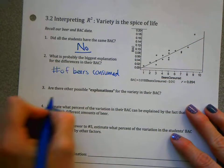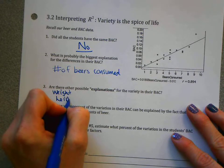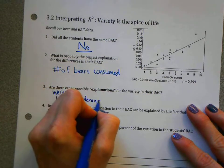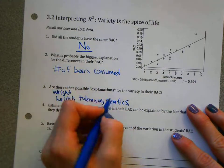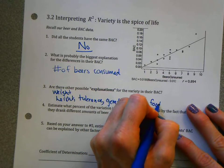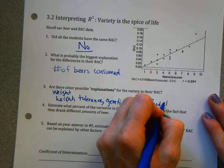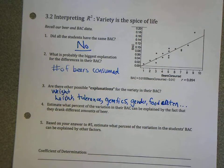I'm sure you could think about a lot of different things. Things like your weight, your height, tolerance, genetics. As somebody in another class said, maybe even your gender could have influence. The food you ate that day. These are all things that could be other reasons for why we didn't all have the same blood alcohol content.